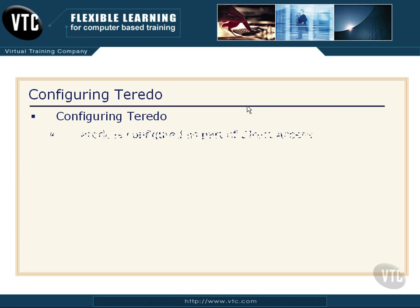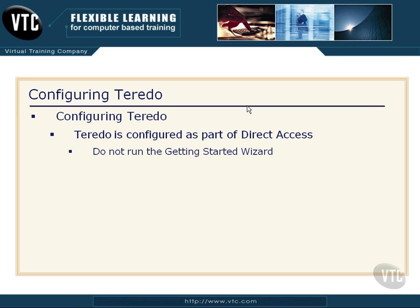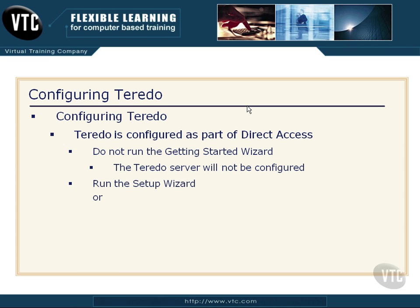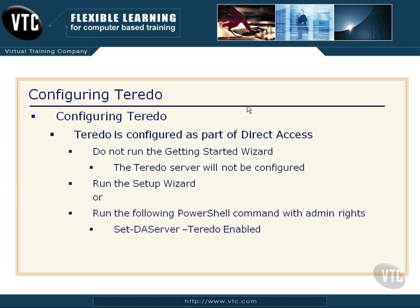To configure Teredo, and this is a bit interesting, Teredo gets configured as part of the Direct Access functionality that's new in Windows Server 2012. If you run Direct Access and you're setting that up using the Getting Started Wizard, oddly enough it will not configure Teredo, even if you have the two static IP addresses — your Teredo server does not get configured. If you run the Setup Wizard, not the Getting Started Wizard but the Setup Wizard, or you can run the following PowerShell command with admin rights — which is what most people opt to do — notice Set-DAServer with the -Teredo switch and then the word Enabled. It will configure that Teredo server for you.